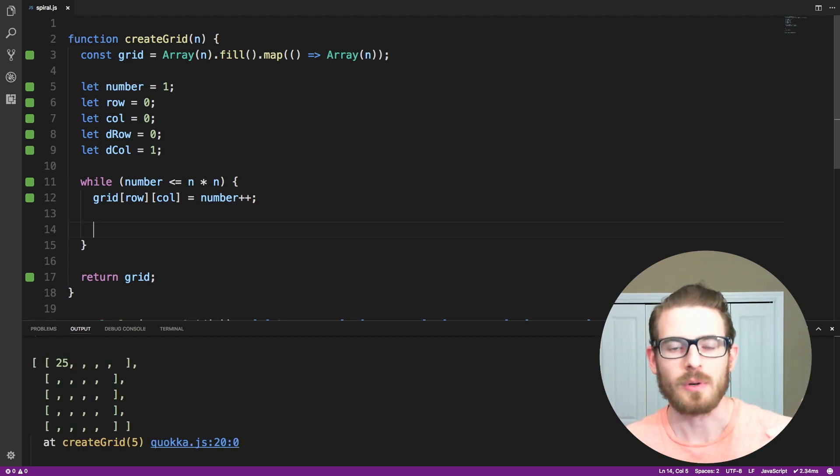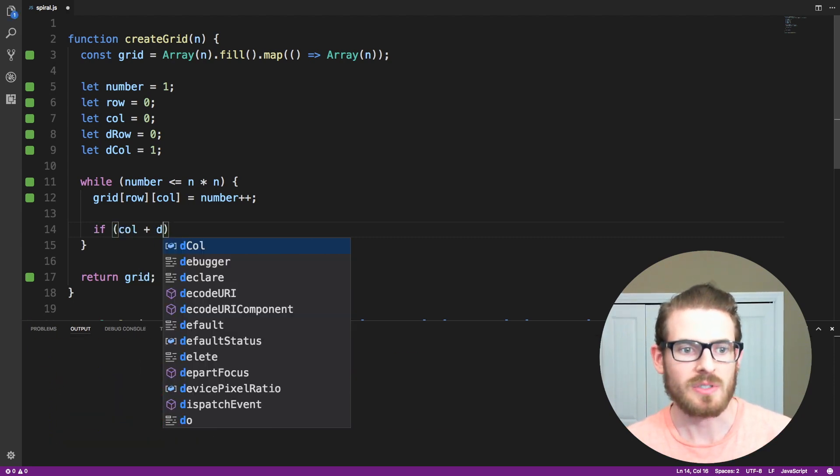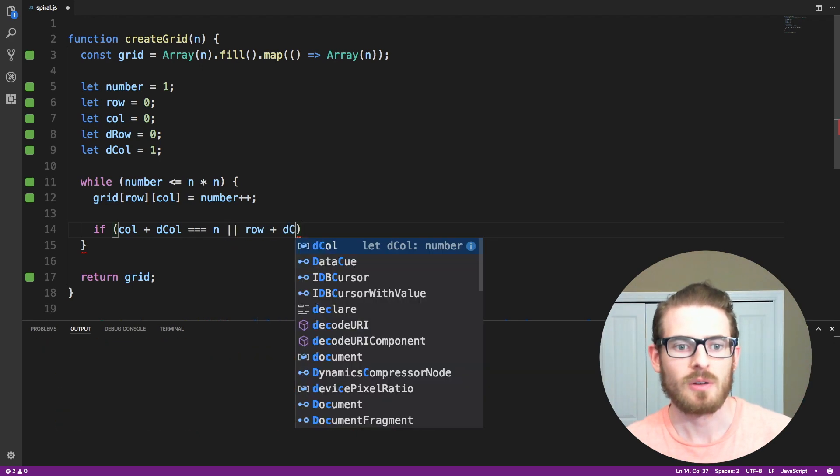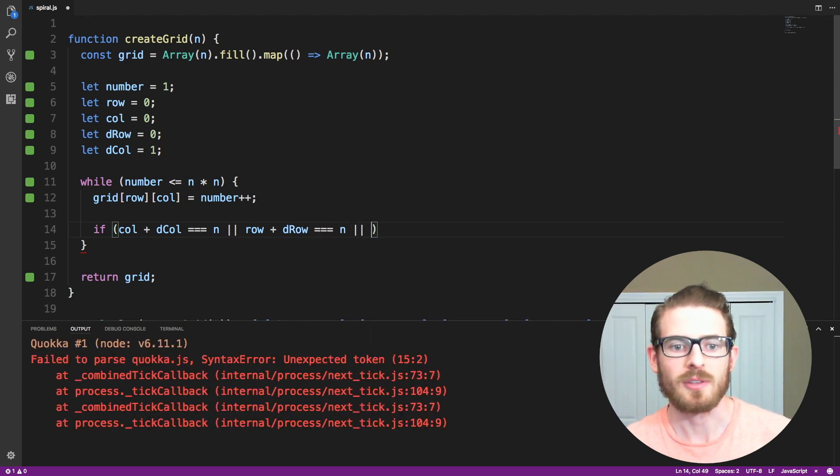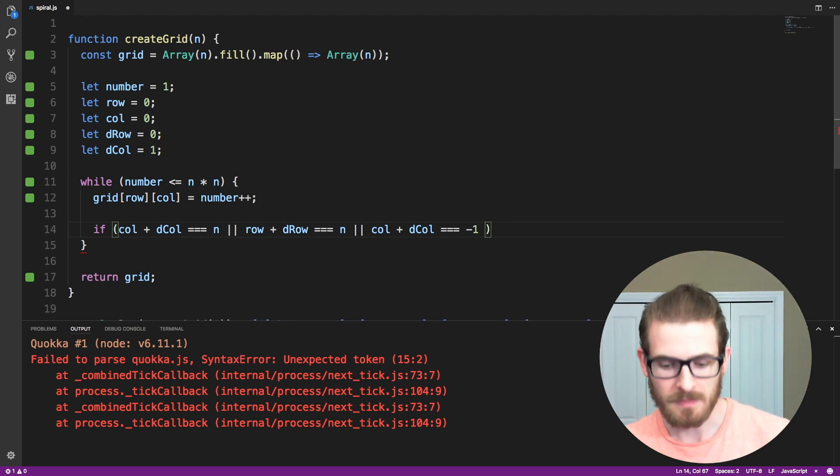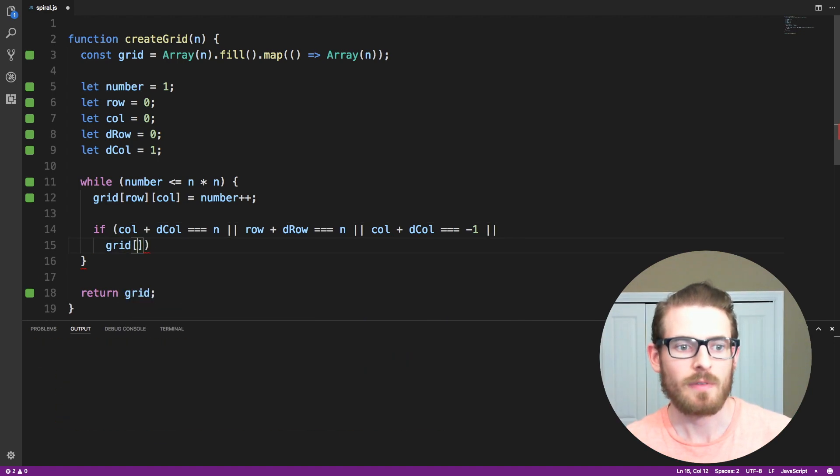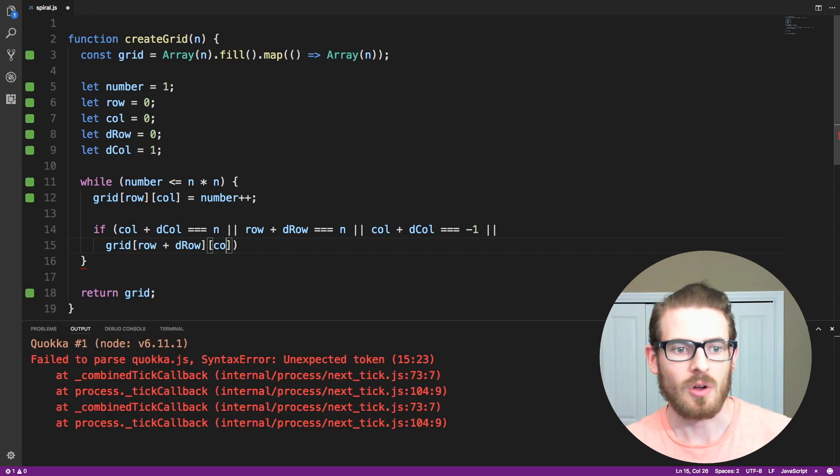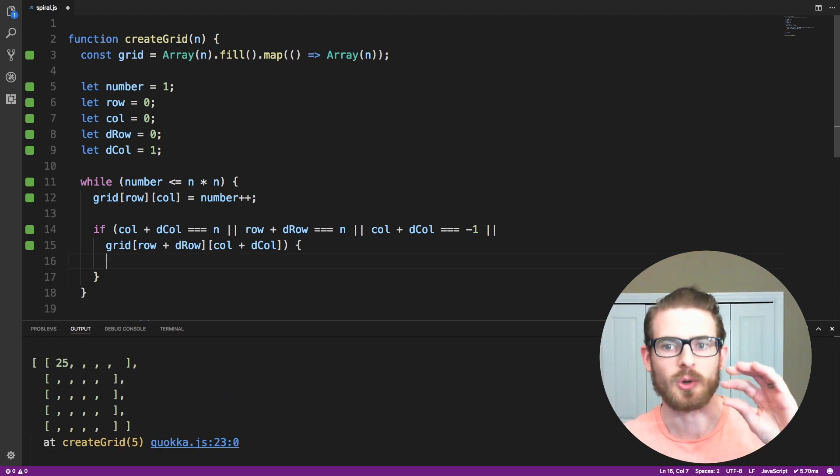And like we talked about, after we place a number, we need to check if the next location we're going to is out of bounds. So I can say if column plus dcolumn is equal to n, which means are we going out of bounds on the right side of the grid. And I can say if row plus drow is equal to n, meaning are we about to go out of bounds on the bottom of the grid. And I can say if column plus dcolumn is equal to negative 1, that's checking if we're about to go out of bounds on the left side of the grid. And then finally we can say if we've already seen the location that we're about to go to, so grid of row plus drow, and then column of column plus dcolumn, if that's already defined, this is where we need to do our whole swapping logic or turn by 90 degrees clockwise.